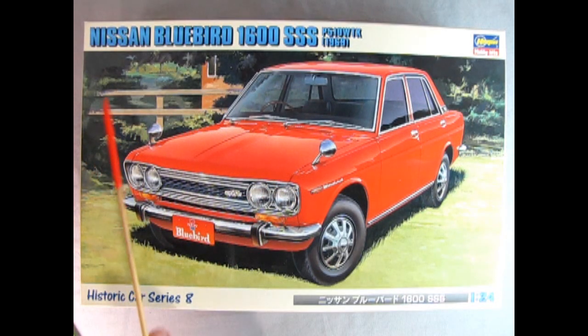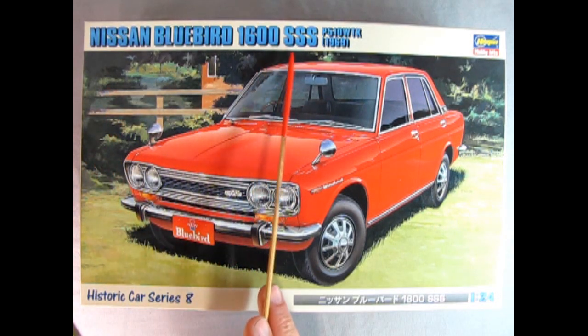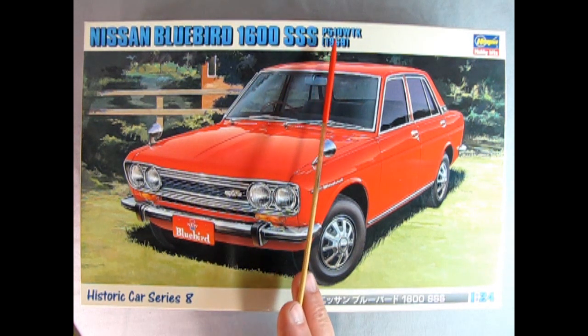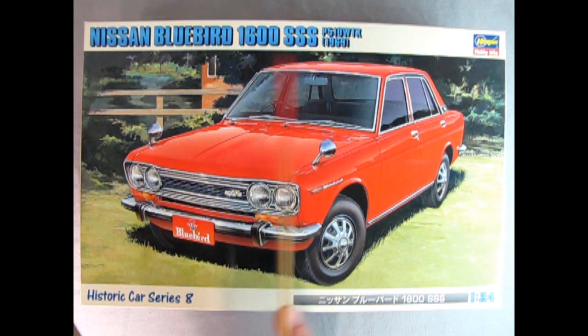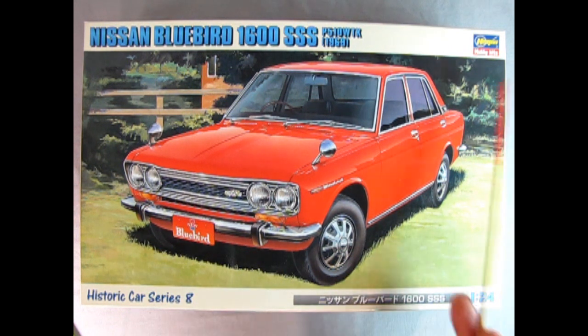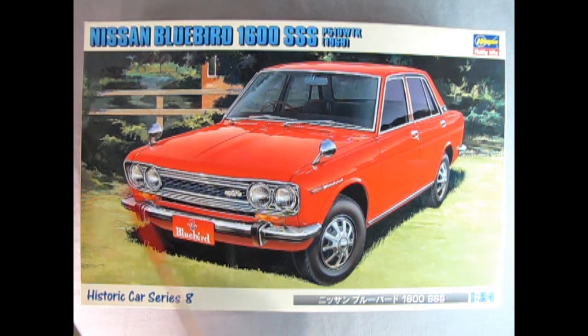Down on our bench we have the Nissan Bluebird 1600 SSS P510 WTK from 1969. This is one of the historic car series number eight from Hasegawa and here you can see the wonderful red car with four doors and those awesome old Datsun hubcaps. It was known as a Datsun 510 over here in Canada and the USA.